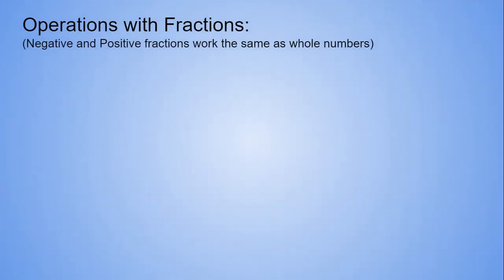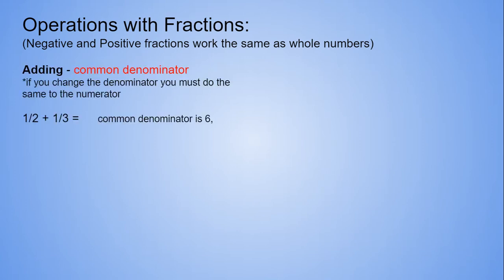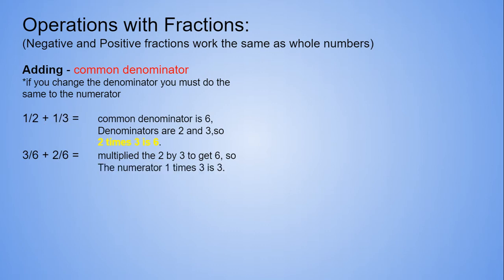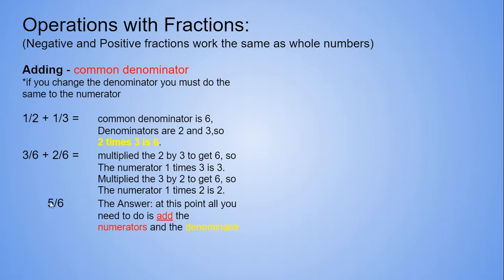For fractions, adding fractions, you need a common denominator. If you change the denominator, you must change the numerator. So in this case, to get our denominator, 2 times 3 gives us 6. So I change both denominators to 6. So then I change the numerators. The 1 times 3 gives us 3, 1 times 2 gives us 2. And then all you have to do is add the numerators at this point. 3 plus 2 gives us 5, and then the denominator stays the same, 6.